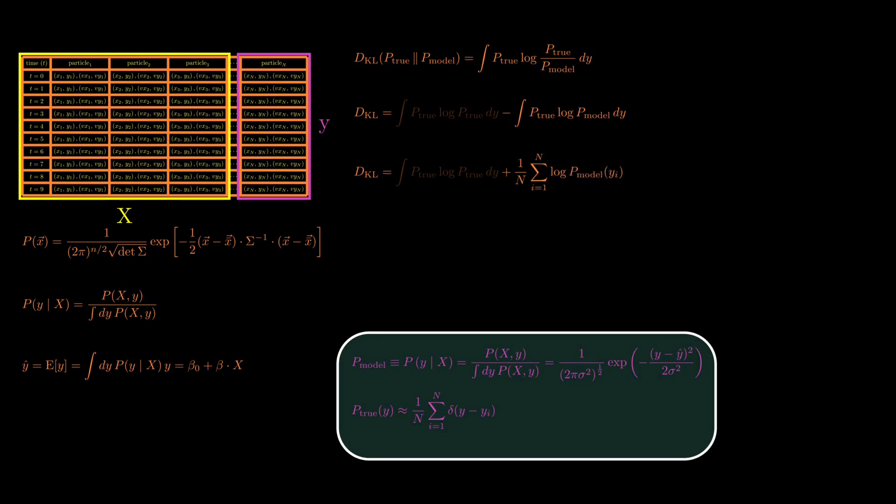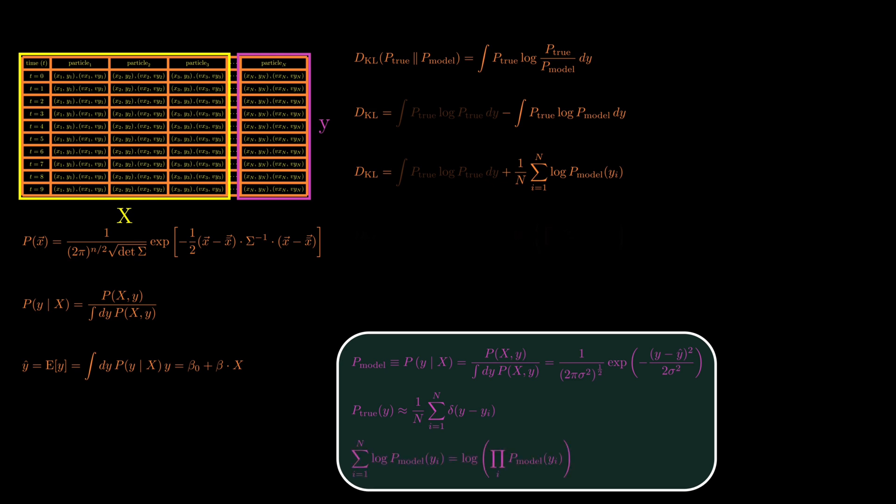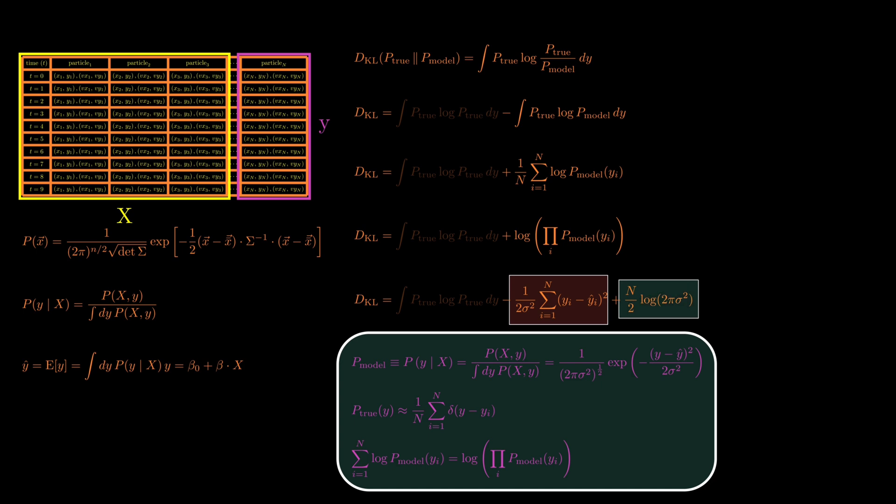After dropping constants, we're left with the sum of log probabilities from our model. If we now plug in the Gaussian form of the model, we get a log likelihood that includes two terms. One that involves the sum of squared errors between the observed Y values and our predicted values, and another constant term. Only the first term depends on the beta parameters.